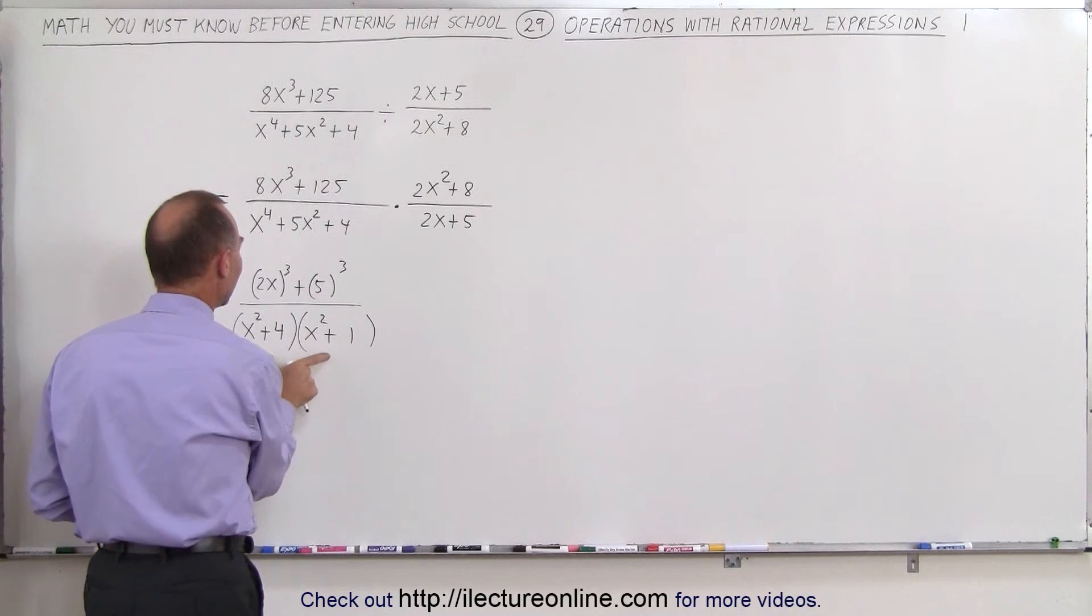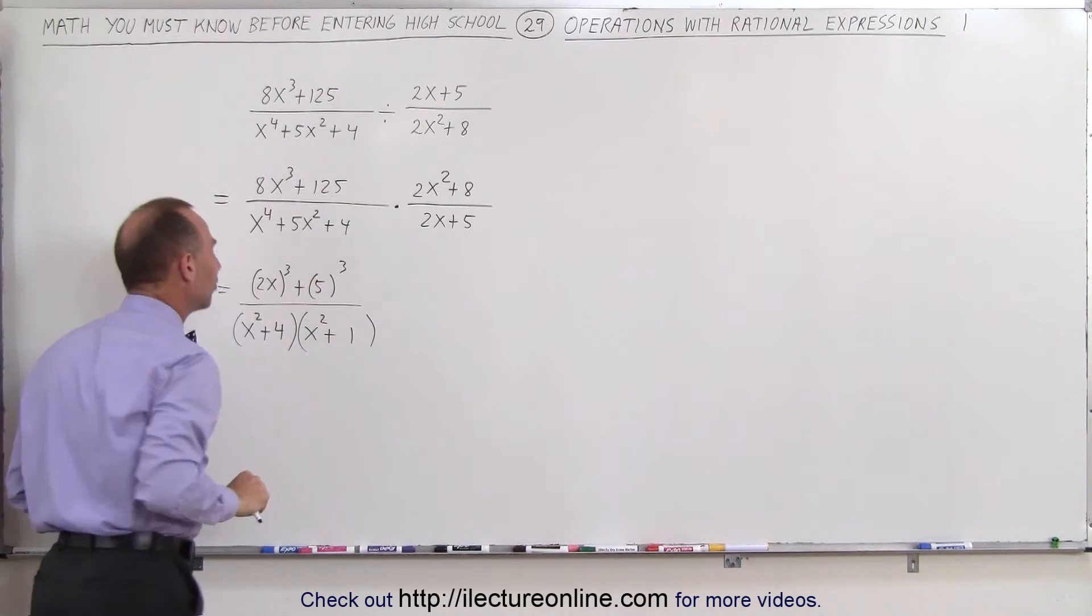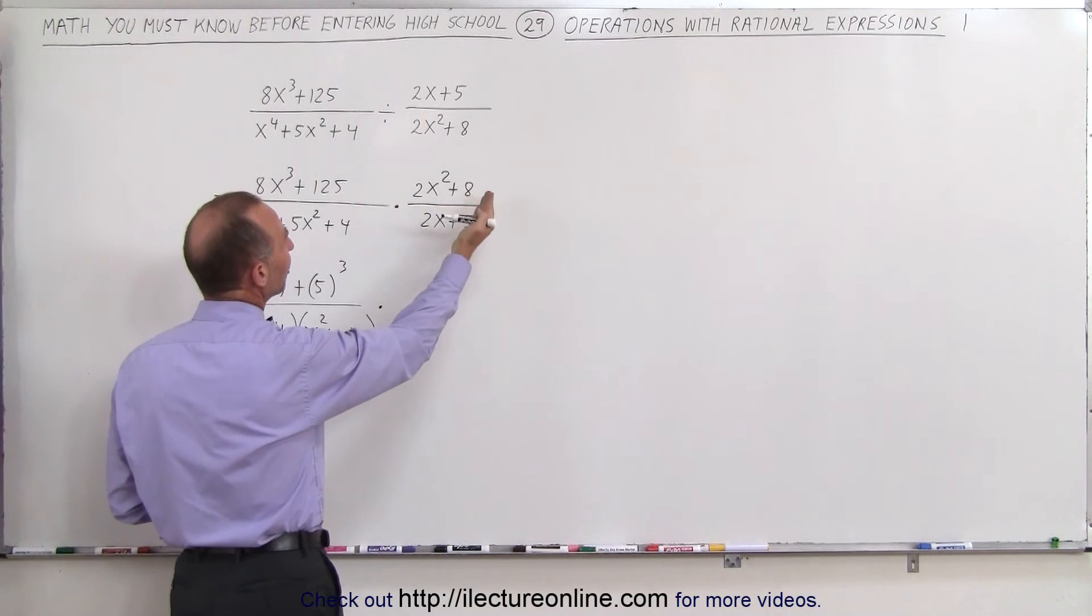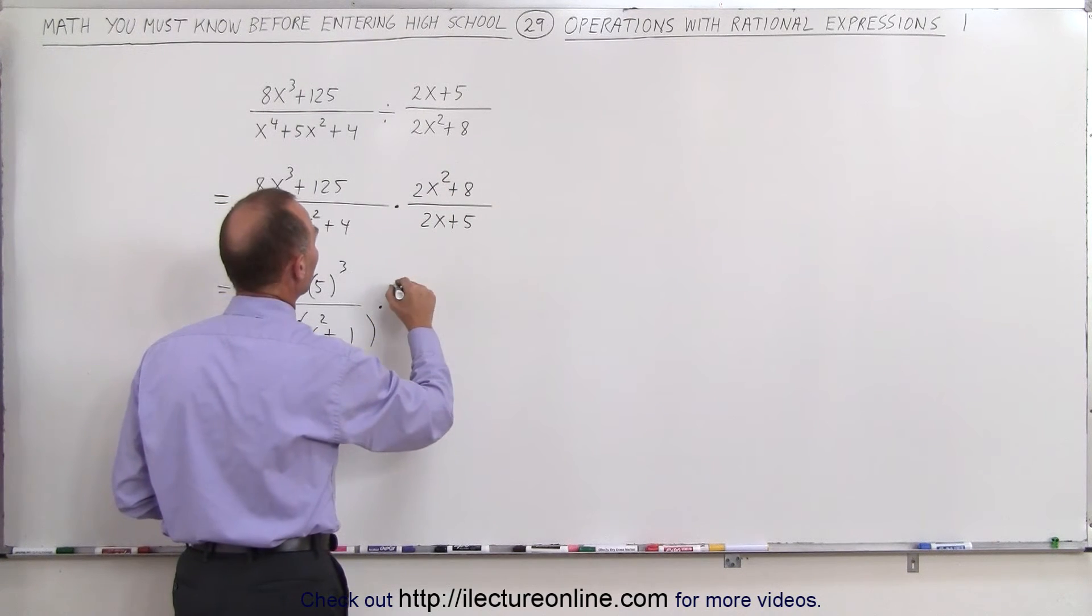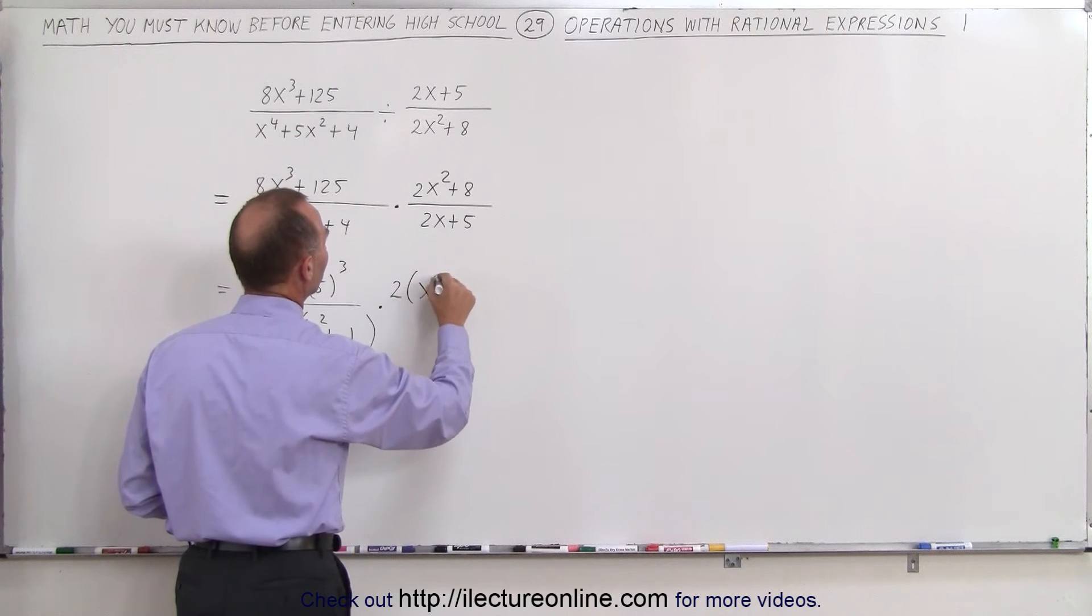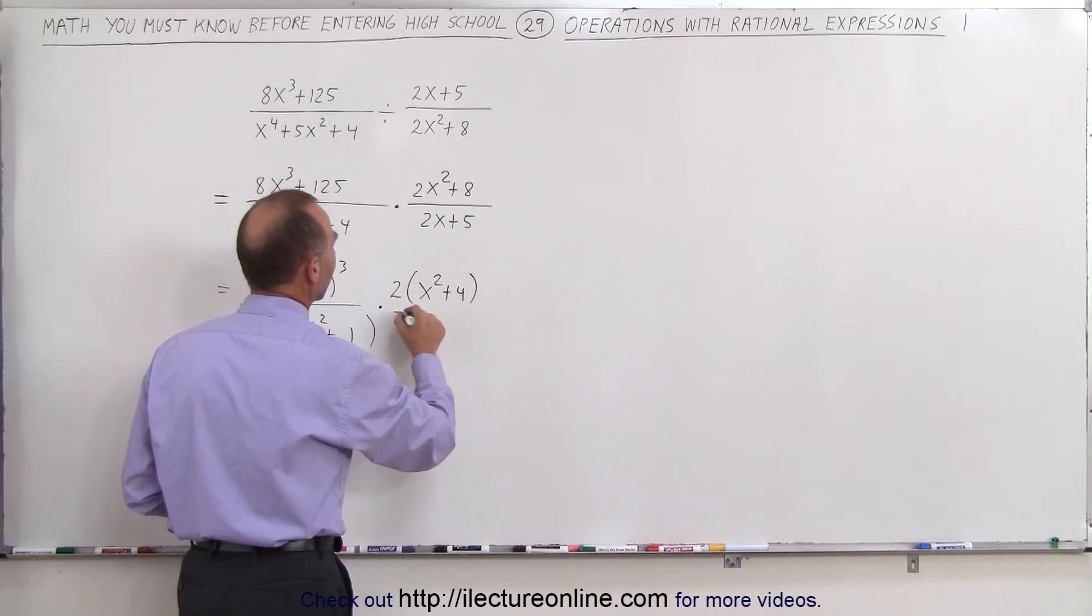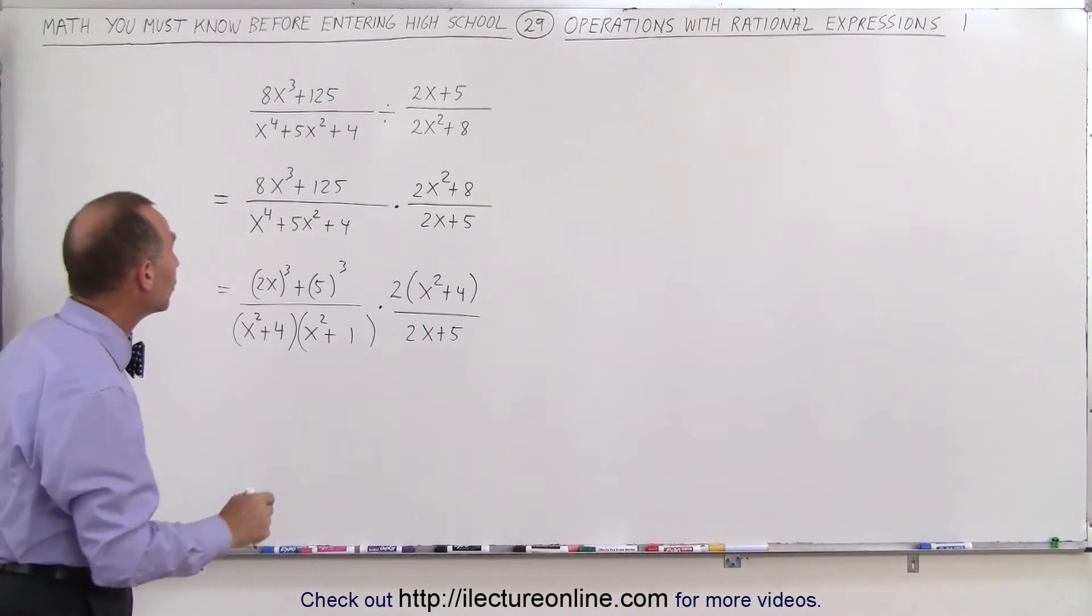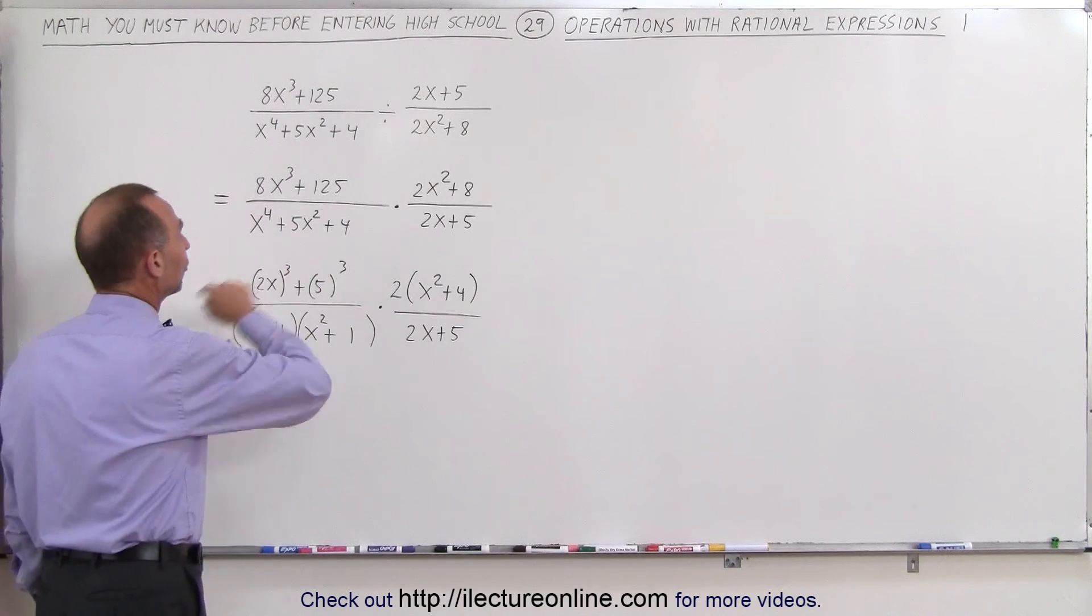Now we multiply this times - here we can factor out a 2, this becomes 2 times x squared plus 4. And here, well I can't factor out anything, so this can be written as 2x plus 5. One more thing we need to do is factor this numerator.